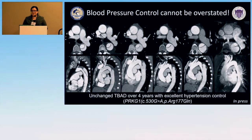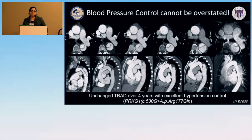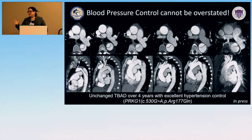The cornerstone of medical management is hypertension control — that cannot be overstated. Even in people with heritable connective tissue disorders, I've had Marfan's patients and patients with PRKG1 mutations who are very fastidious about blood pressure control and have actually stabilized their aorta over time. It doesn't make follow-up any less intensive, but it's a tool that can make a difference.